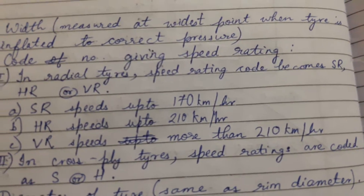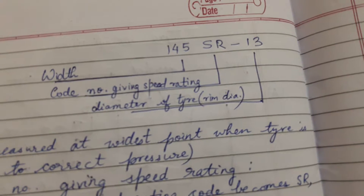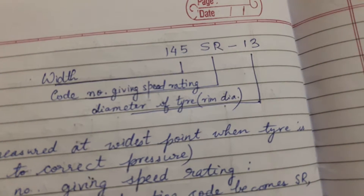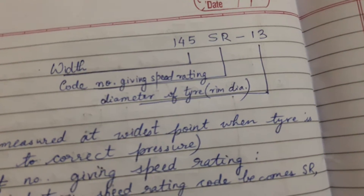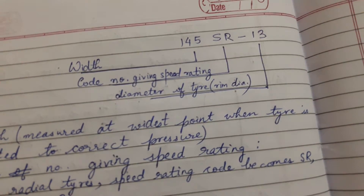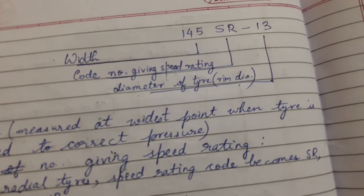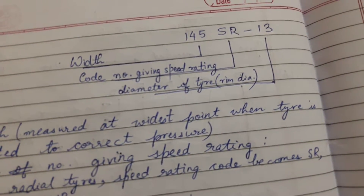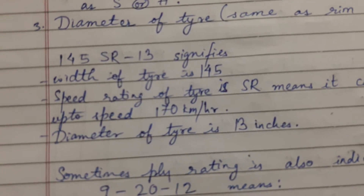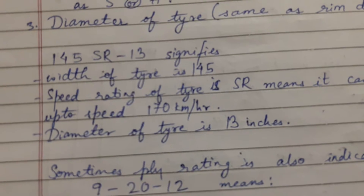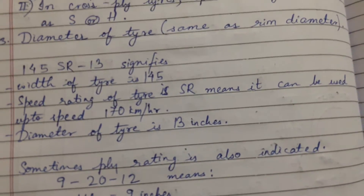The R in SR and HR indicates a radial tire. In cross-ply tires, speed ratings are coded as S or H. So, the first part gives the width, the second part gives the speed rating, and the last part — 13 — is the rim diameter.